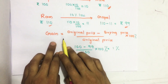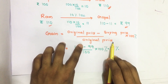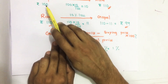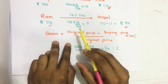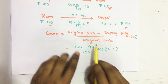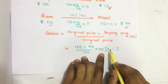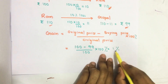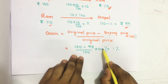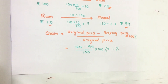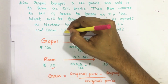Let us see how to find that. Gain equals original price minus buying price, divided by original price, into 100. Here the original price is Rs. 100 but Gawbal gets the phone from Ram at Rs. 99. So gain percent equals (100 minus 99) divided by 100, into 100 — the 100s cancel, giving 1%. Our answer is option C: gain 1%.